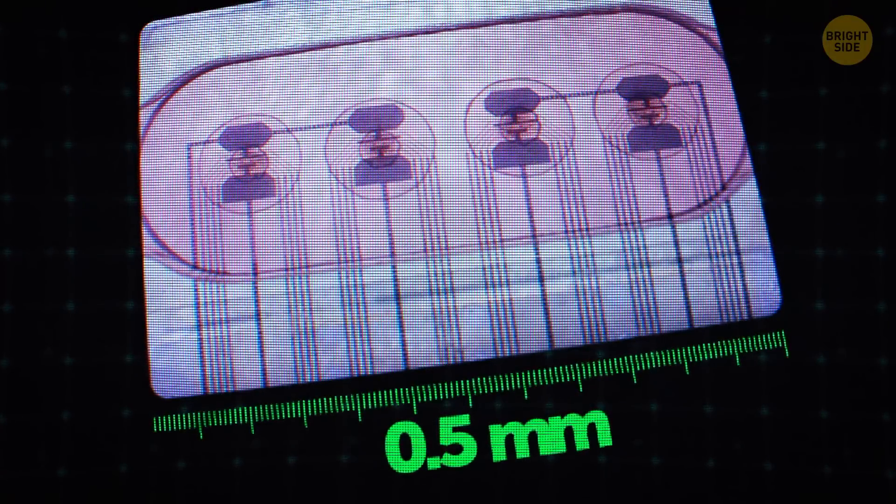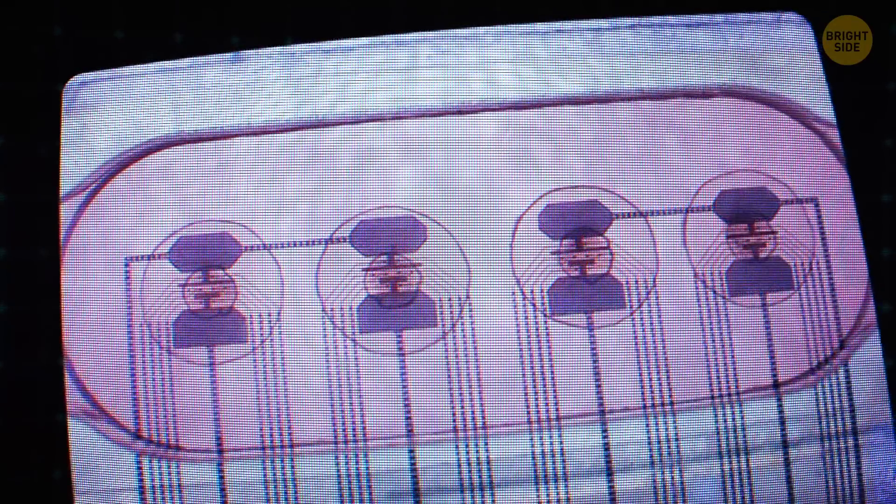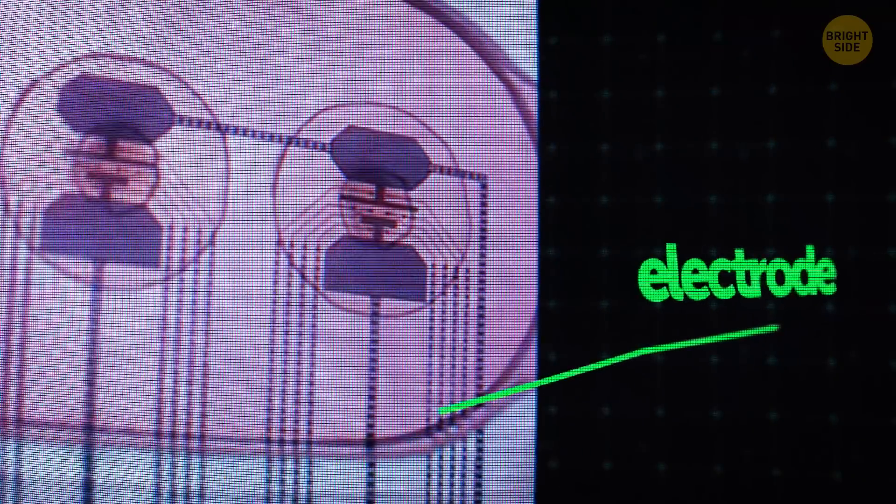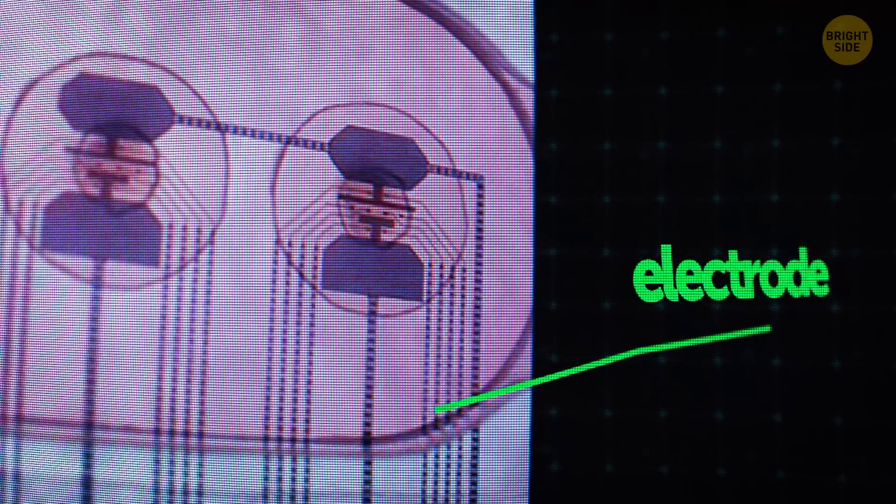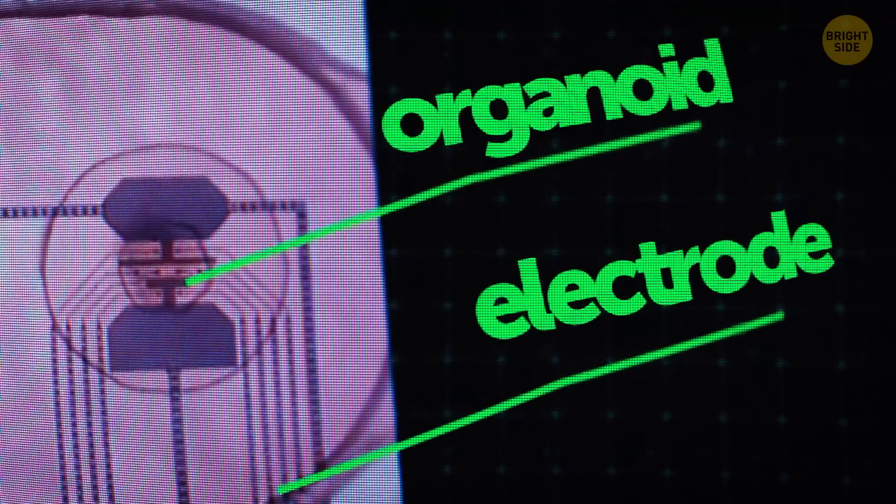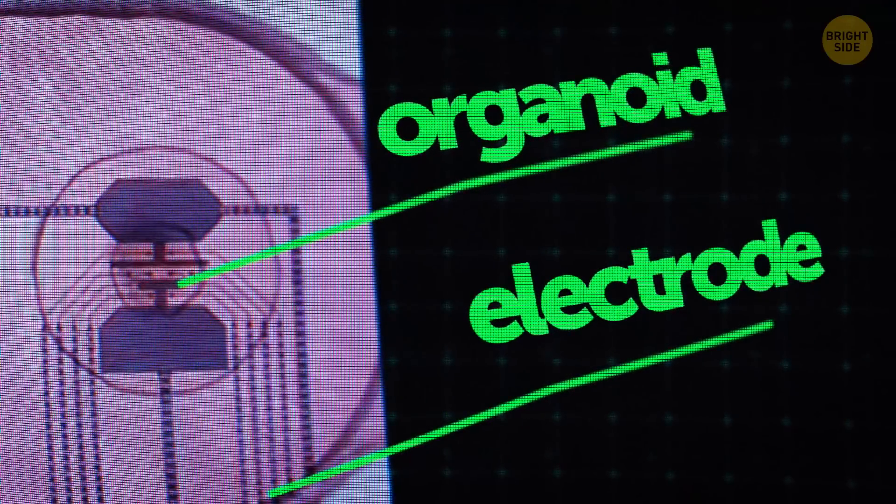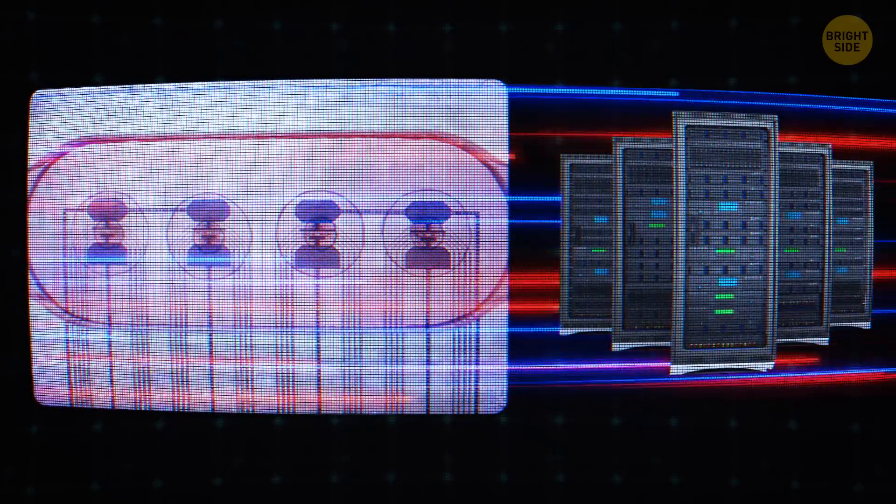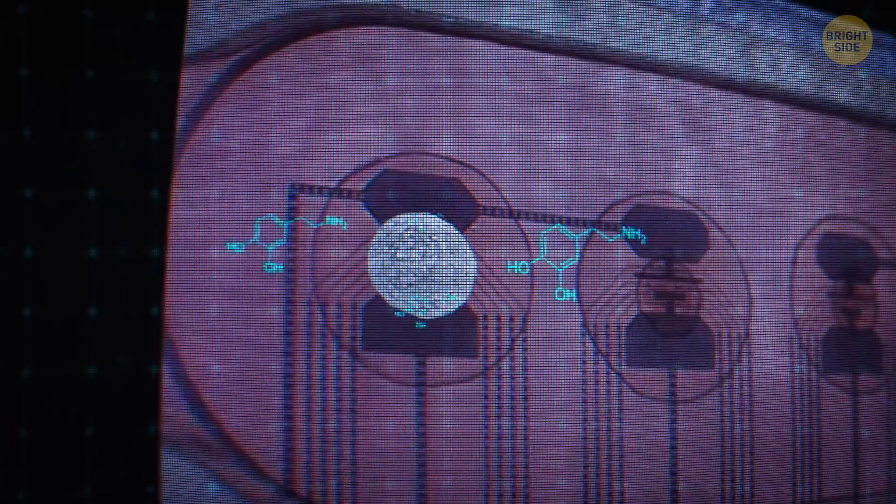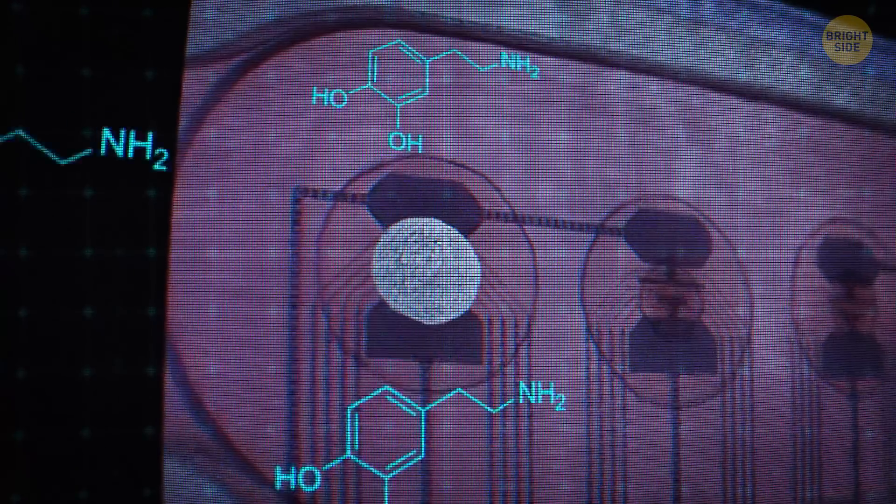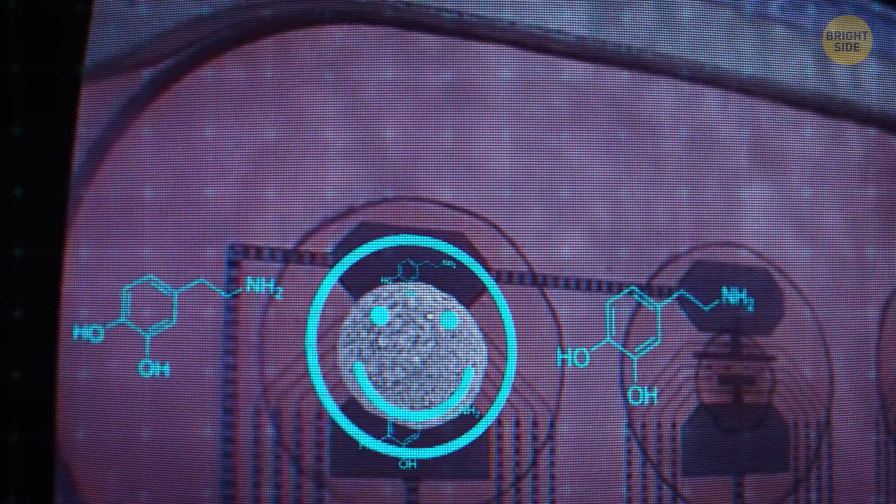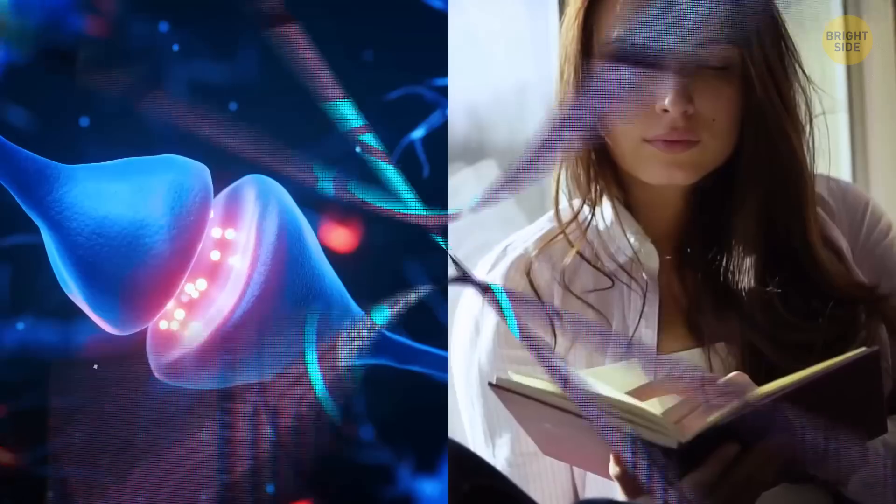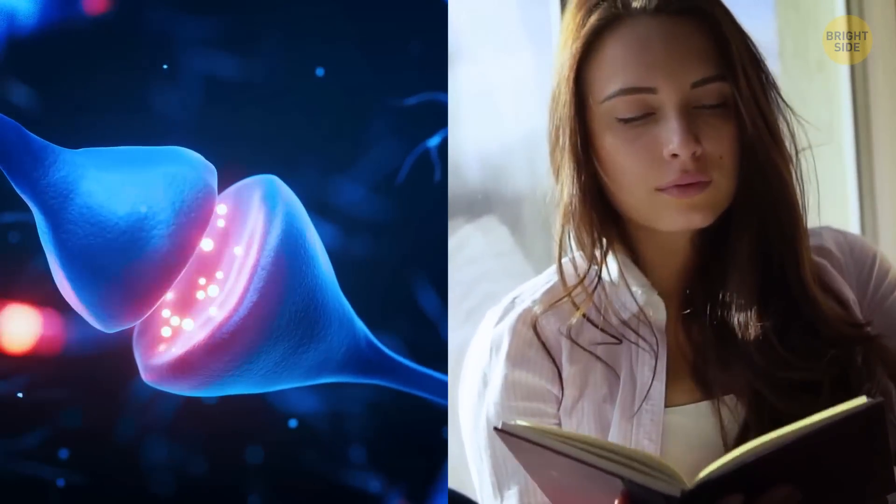Each brain organoid the computer uses is very small, only half a millimeter wide, and there are four of them in each processing unit. These organoids are connected to eight tiny wires called electrodes that can send signals to the neurons inside the organoids and connect them to regular computer systems. The neurons are given a small amount of dopamine, a chemical that makes us feel good, to encourage them to learn.